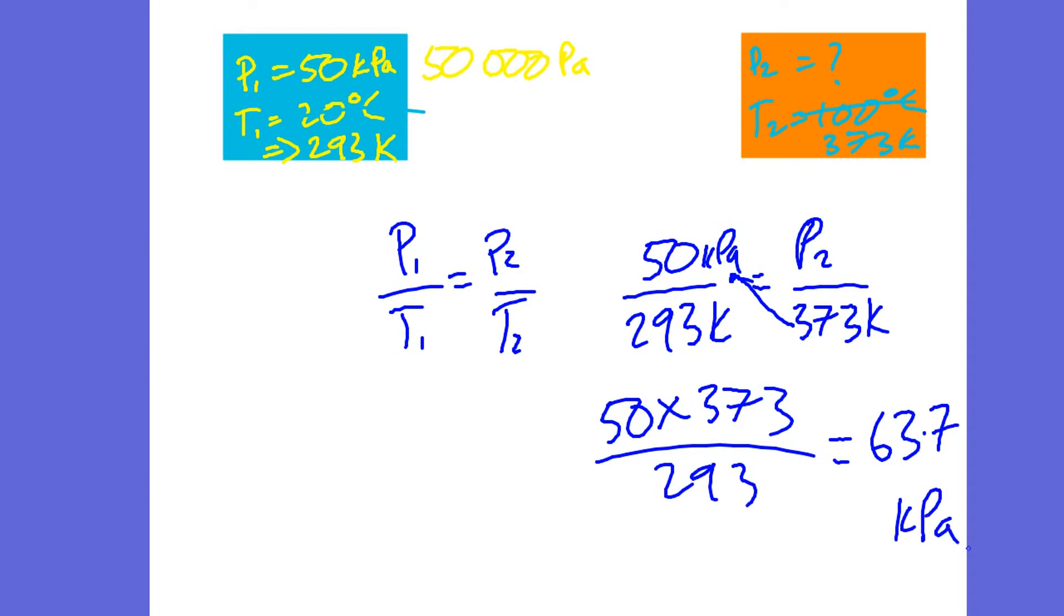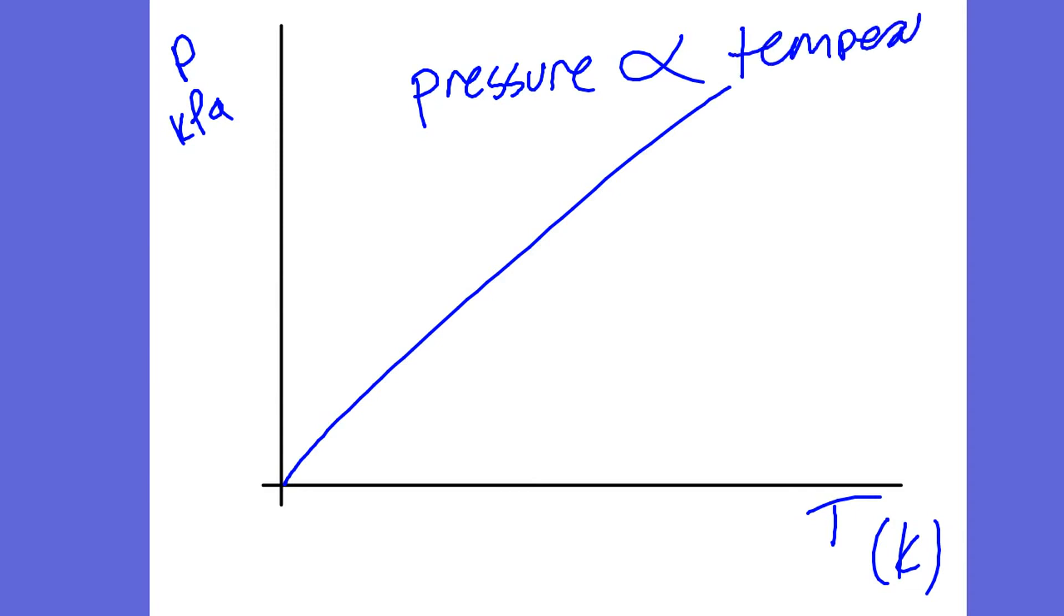So just to remind you, if you're not working in Kelvin, you're going wrong. So the temperature went from 20 degrees C to 100 degrees C, which you'd think would be five times the temperature, but it's not. It's only a much smaller increase. So the pressure went from 50 kilopascals to 63.7 kilopascals. Now if we plotted a graph of pressure in whatever unit we want against temperature, but in Kelvin, then we get a nice straight line. We get a straight line because the pressure is directly proportional to the temperature. Of course, temperature is in Kelvin. Pressure is directly proportional to temperature, and what that means is if we double one, if we double the pressure, that's going to lead to double the temperature, or I suppose the other way around. If you double the temperature, that's going to lead to double the pressure.